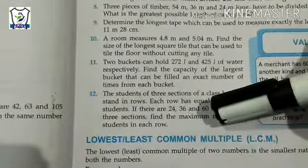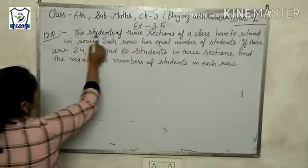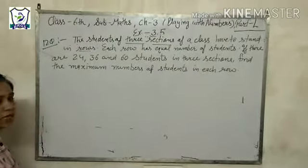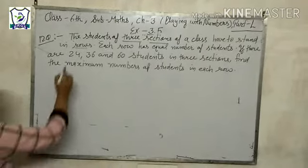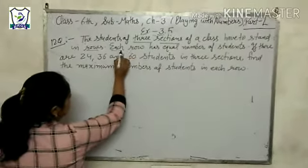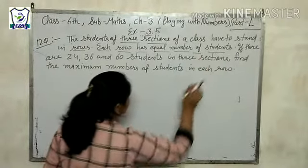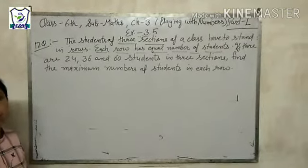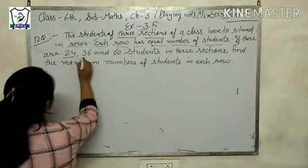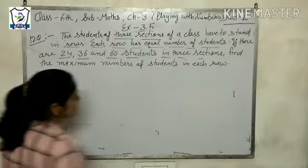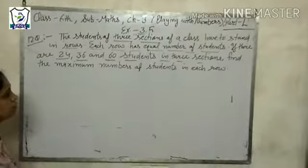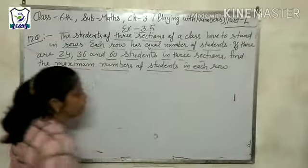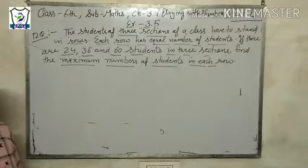Now we will do the 12th question of this exercise. The students of three sections of a class have to stand in rows. Each row has equal number of students. The number of students should be equal in each row. If there are 24, 36, and 60 students in three sections.